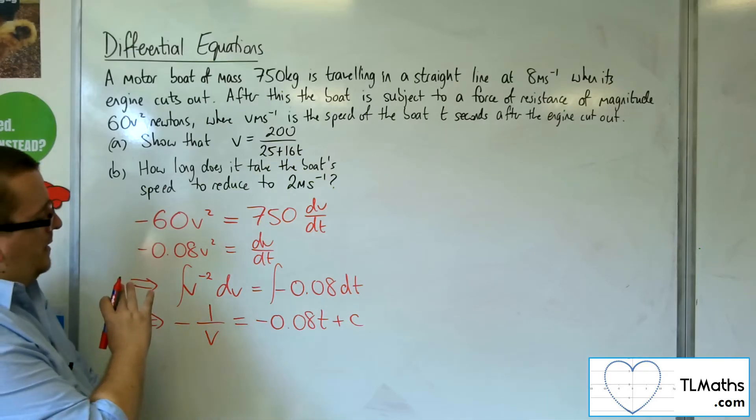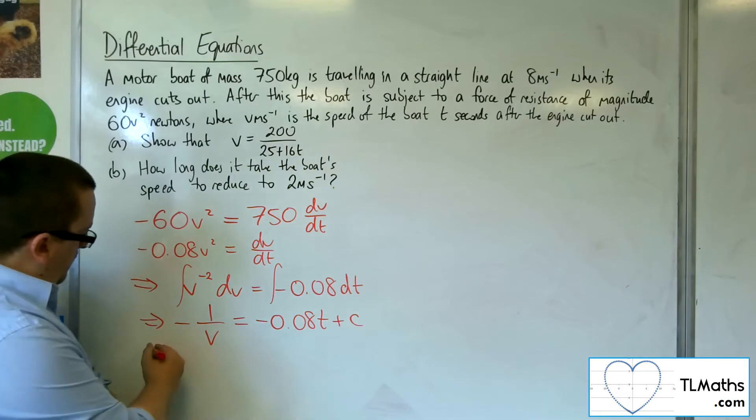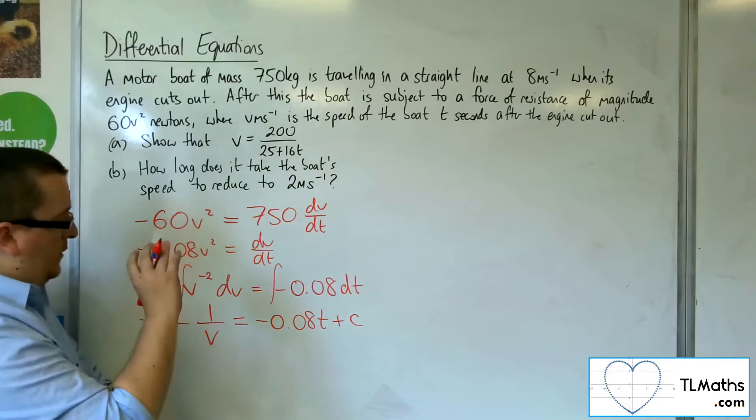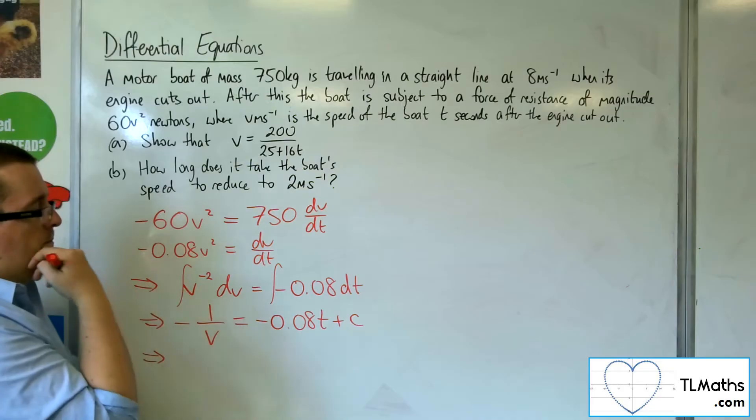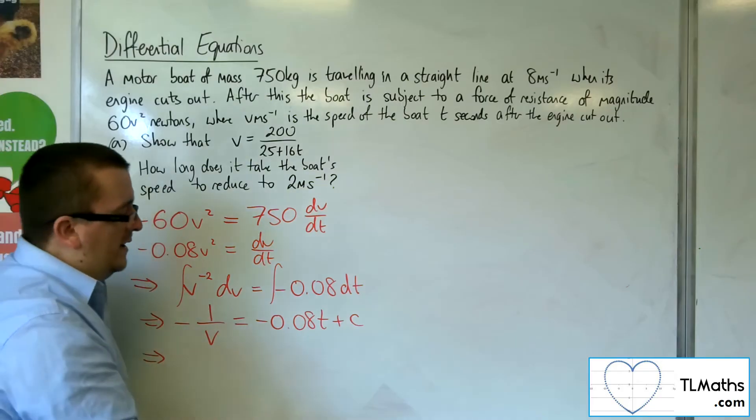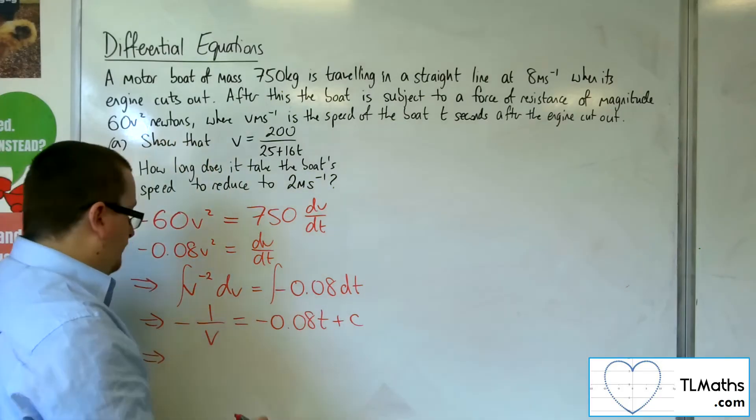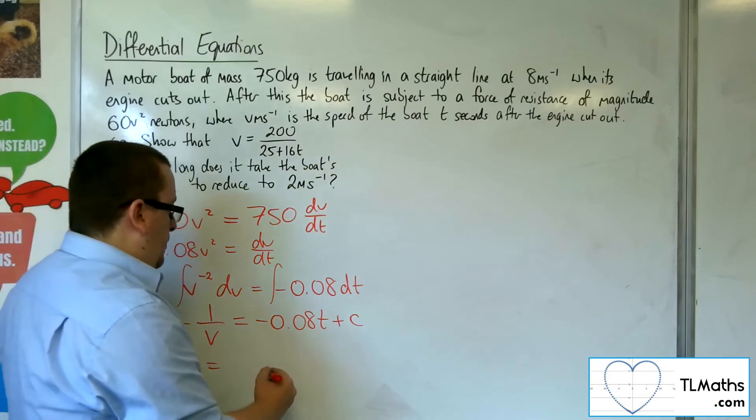So if I multiply through by minus 1 and also multiply both sides by V, divide both sides by the minus 0.08T plus C, I can get V is equal to...